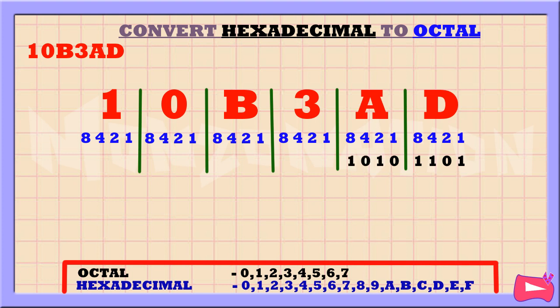A is the sum of 8 and 2, so we're going to replace 8 and 2 with 1. We didn't use the 4 and 1, so let's replace them with a 0.